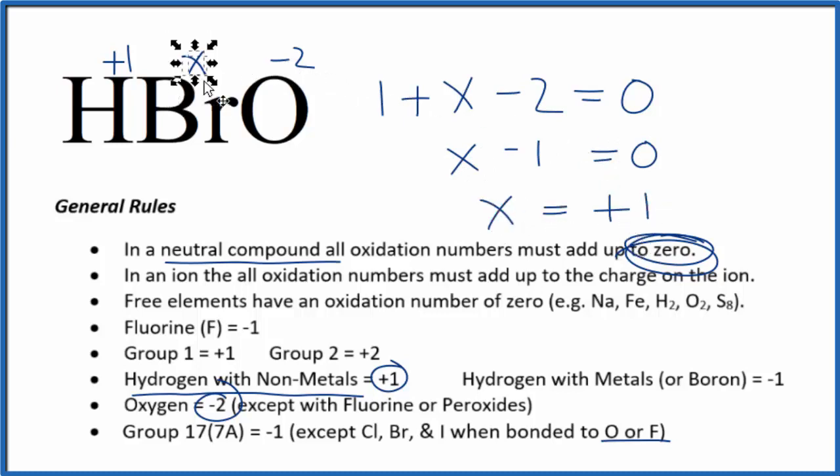So the oxidation state on that bromine is going to be a plus one. And you probably could have figured that out without the algebra, but it's good to know how to do this. This is Dr. B with the oxidation numbers for each element in HBrO, hypobromous acid. Thanks for watching.